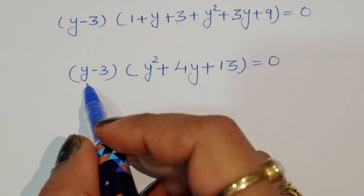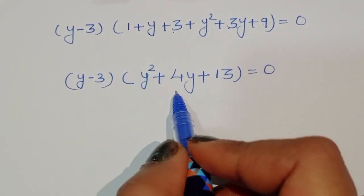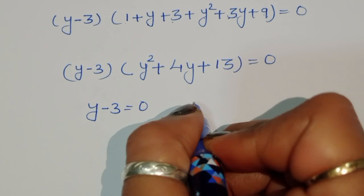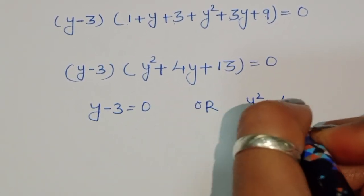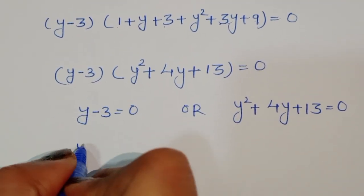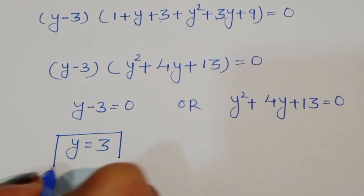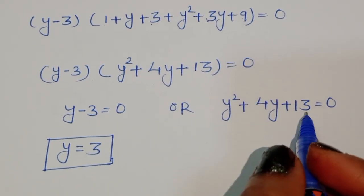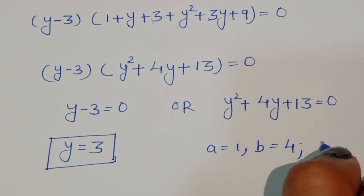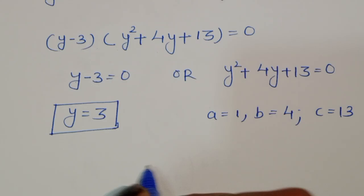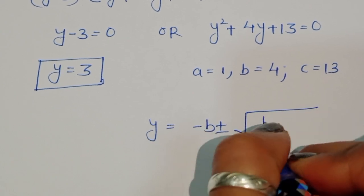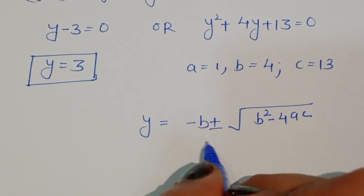We got two equations: first one is y minus 3 equals 0, and the next one is y square plus 4y plus 13 equals 0. From y minus 3 equals 0, we get y equals 3. For the second equation y square plus 4y plus 13 equals 0, the coefficients are a equal to 1, b equal to 4, and c equal to 13.